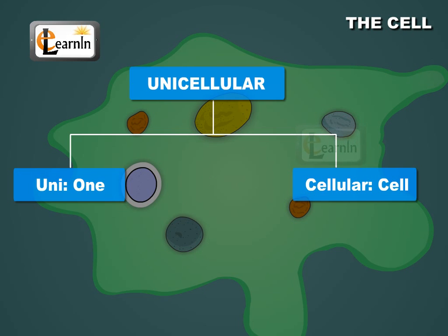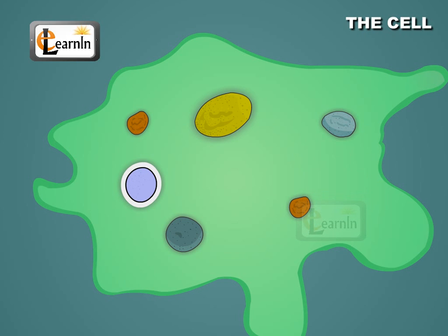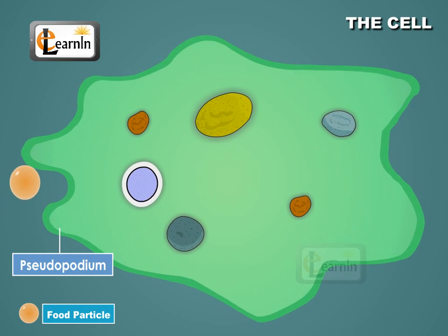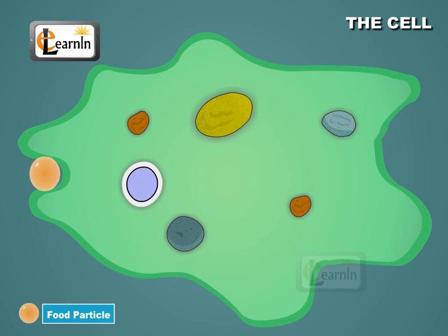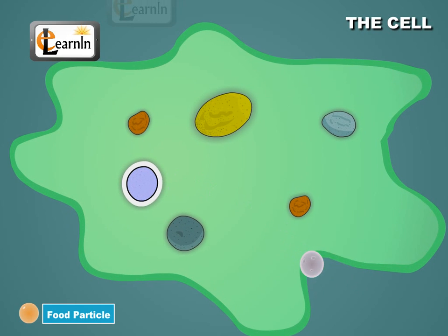Uni means one and cellular means cell. A unicellular organism can also carry out all those functions that a multicellular organism does. A single celled organism, such as the amoeba, can capture food, digest it, respire, excrete, grow and reproduce.